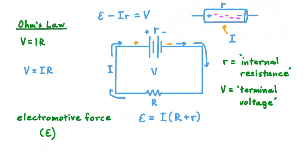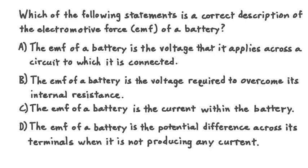Let's get some practice with these ideas through an example. Which of the following statements is a correct description of the electromotive force, EMF, of a battery? A: the EMF is the voltage that it applies across a circuit to which it is connected. B: the EMF is the voltage required to overcome its internal resistance. C: the EMF is the current within the battery. D: the EMF is the potential difference across its terminals when it is not producing any current.